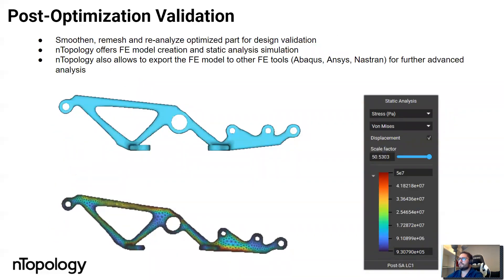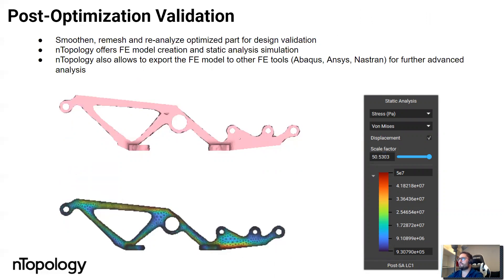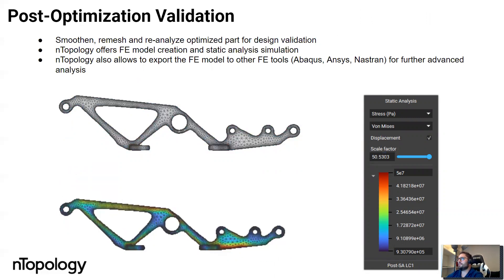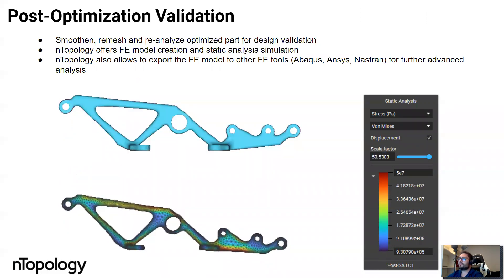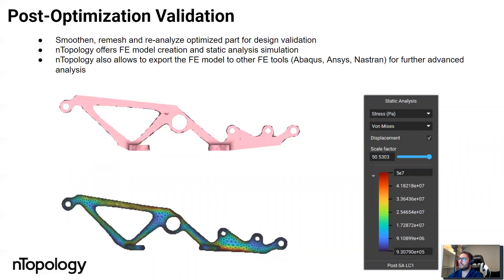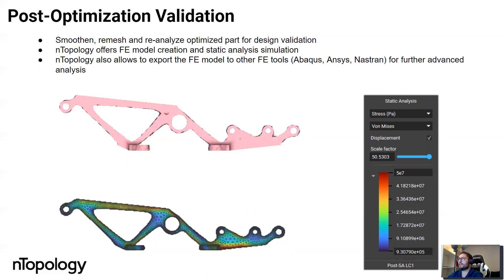You can also benefit from this smoothed part because you can automatically remesh it and reanalyze the optimized part for design validation. In the case of Entopology, we offer you the possibility of running a static analysis in Entop, but you also have the flexibility to export a finite element model to other tools like Abaqus, Ansys, or Nastran and conduct further advanced analyses, for example dynamic analysis, non-linear analysis, or contact simulation.